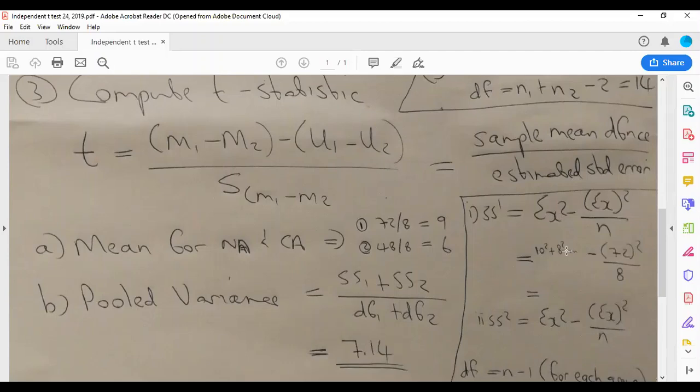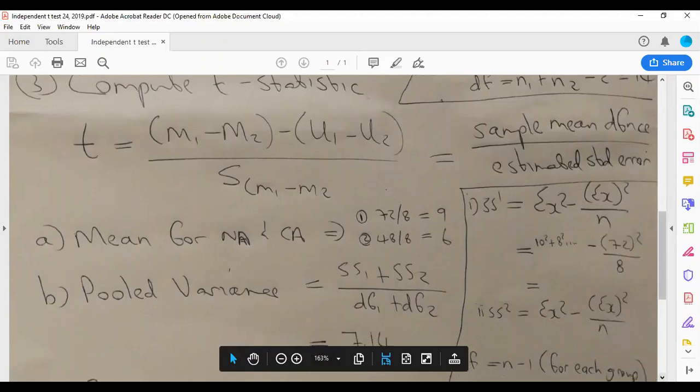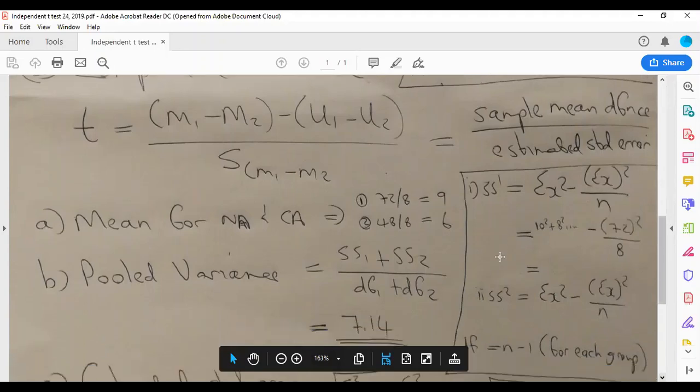Minus the sum of that, like 10 plus 8 plus 7 plus 9 plus 13 plus 7 plus 6, that's 72, divided by n, by the number of scores, that's 8. If you calculate that, you're going to get an answer. I didn't put that answer. And then you do for the second group as well.